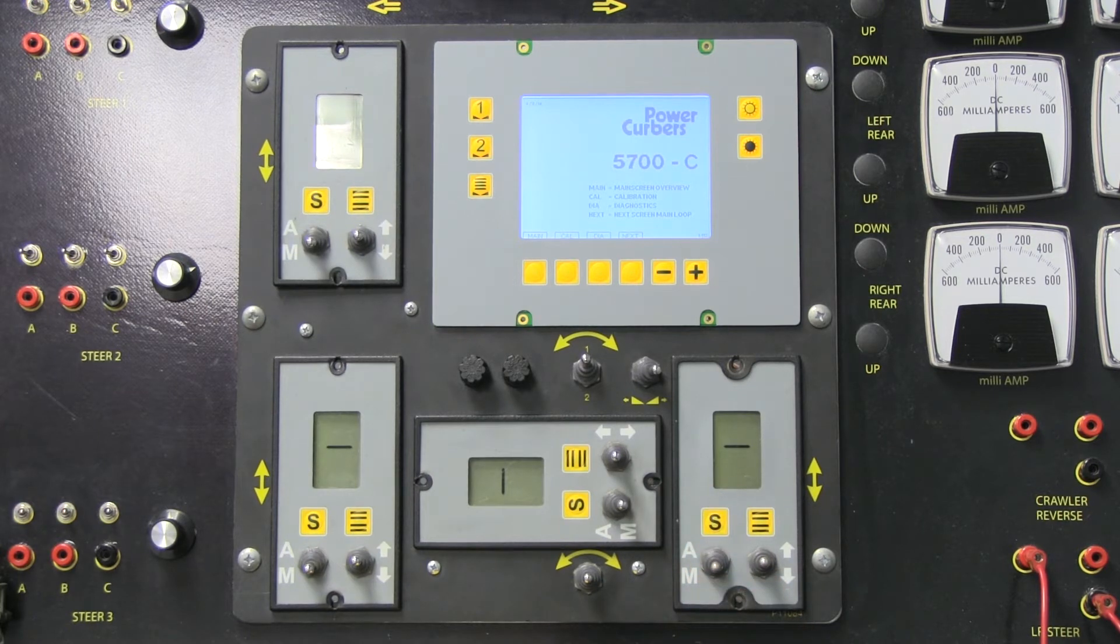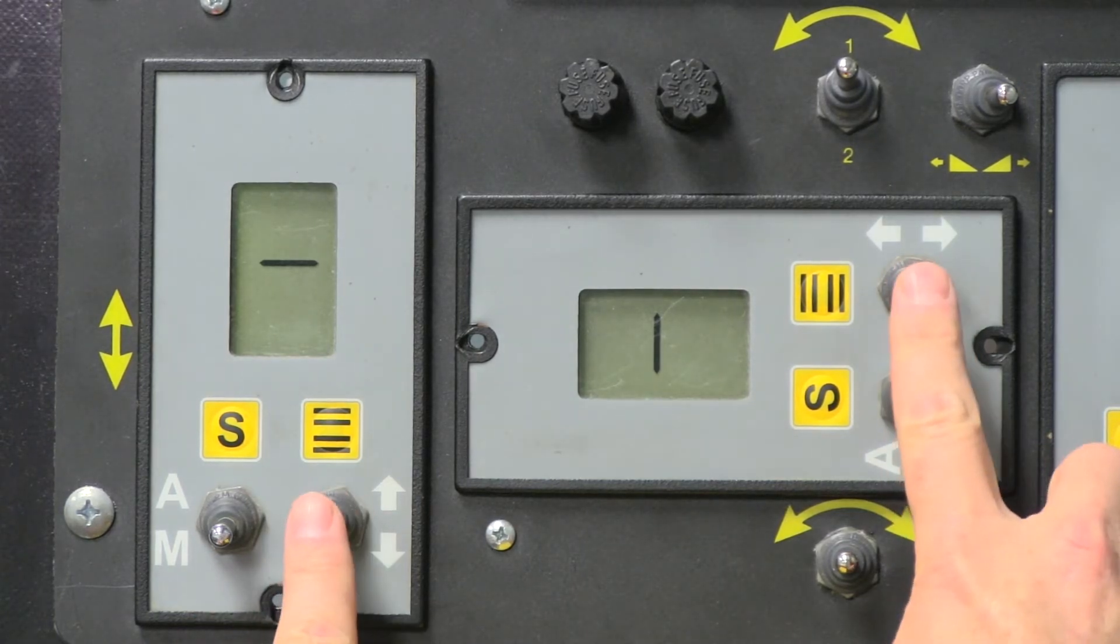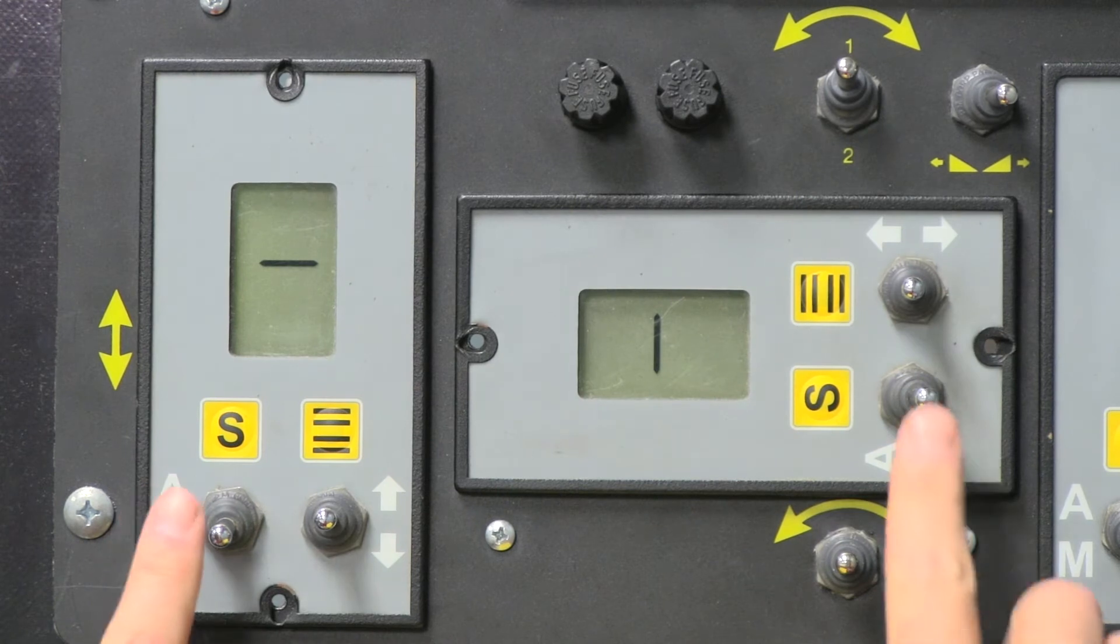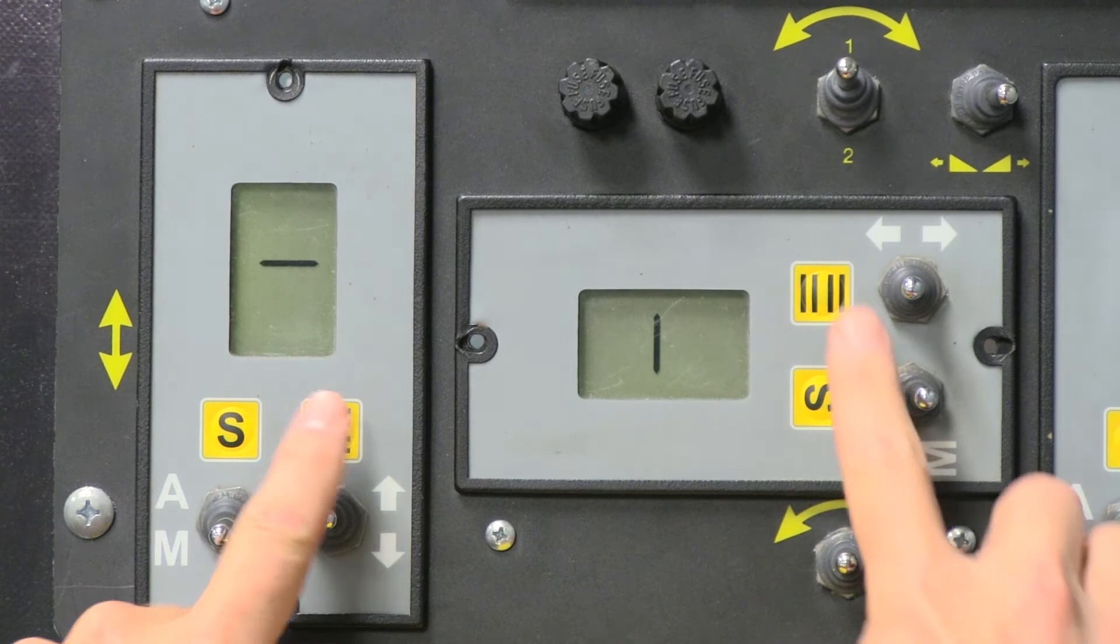Each of the Smart Amps are identical. They each have two toggle switches and two buttons: a jog switch, an auto manual switch, a sensitivity button, and a menu button.